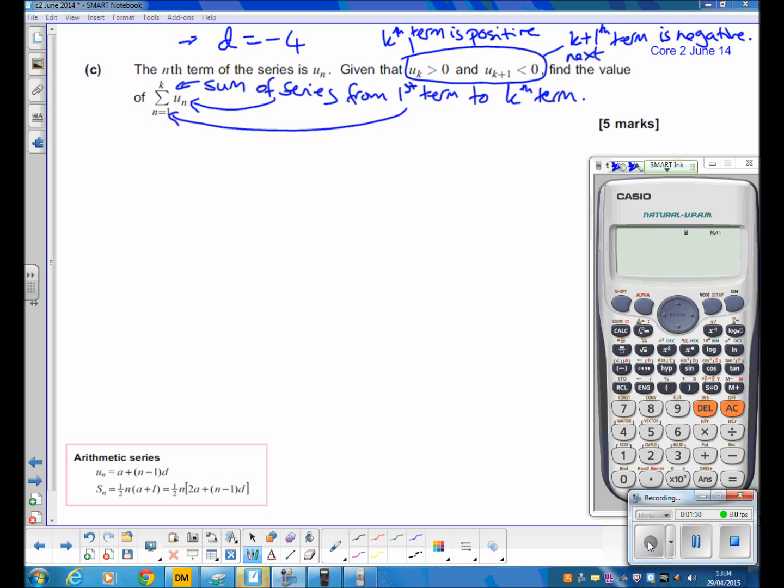You might not know where to start, but the first obvious thing is to work out what a is. You can use either of our equations from part a and b. For example, we had that a+2d is 115, so a-8 is 115, so a is 123.